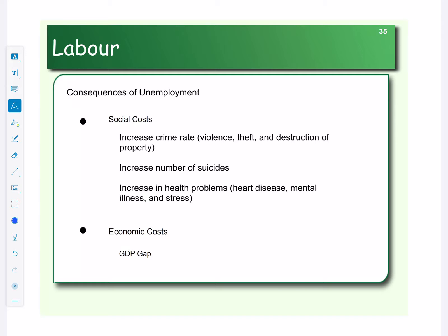This class is really about economics, so let's look at the economic cost of high unemployment. When we look at the economic cost, we're looking at what is called the GDP gap. And the GDP gap is the difference between what our economy could be worth and what it's actually worth.